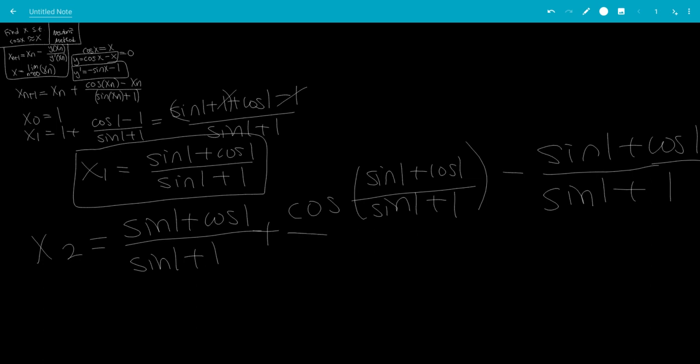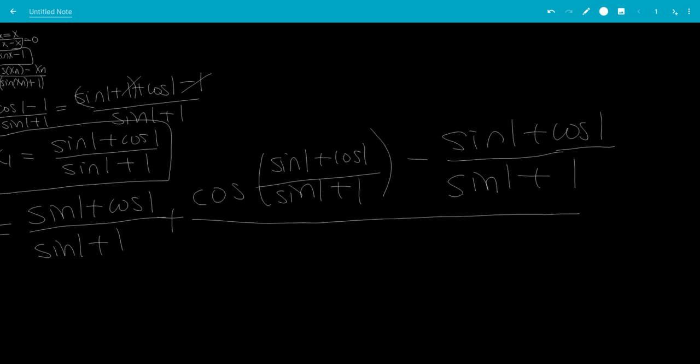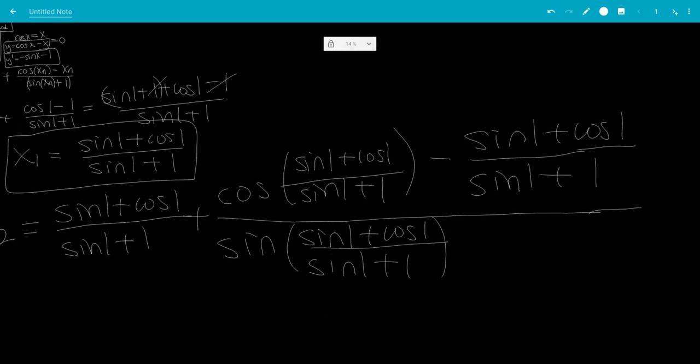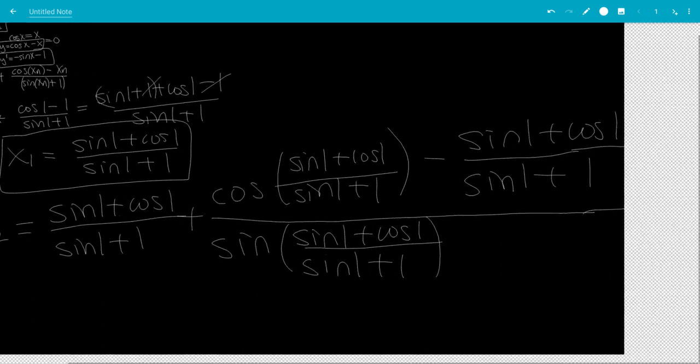And now all over sine of xn. So that would be sine 1 plus cosine 1 all over sine 1 plus 1, and then finally we have plus 1.